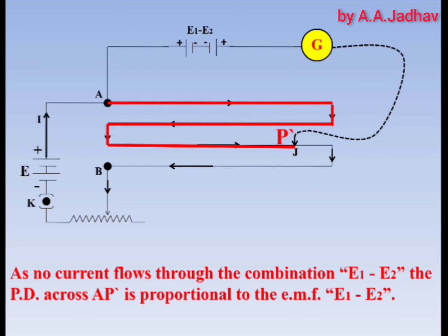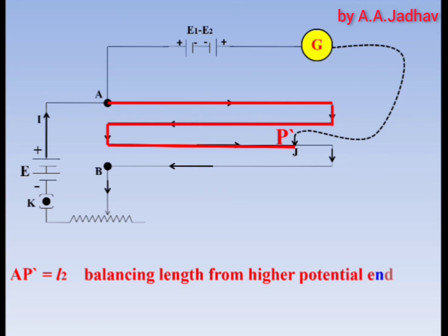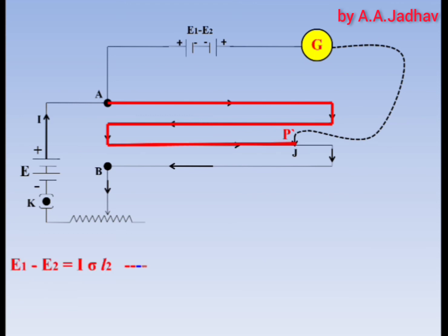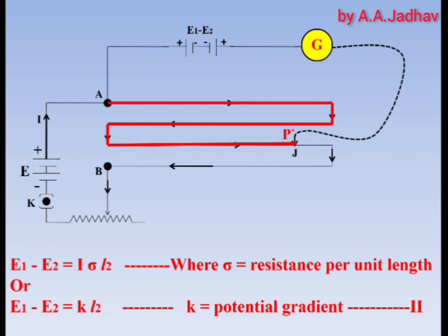Let AP dash equal to L2 be the balancing length from the higher potential end A of wire AB. Since no current flows through the combination E1 minus E2, the potential difference across AP dash is proportional to the EMF E1 minus E2. Therefore, E1 minus E2 equals I·sigma·L2, or E1 minus E2 equals k·L2, where k is the potential gradient. Consider this as Equation 2.